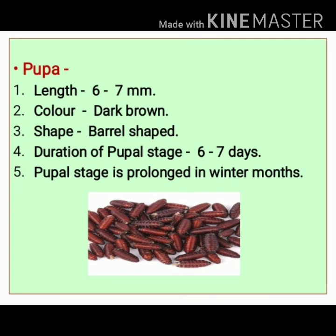Pupa: the length is 6 to 7 millimeters. Note the colour — it is dark brown. The shape is barrel-shaped. The duration of the pupal stage varies from 6 to 7 days, and the pupal stage is prolonged in winter months.